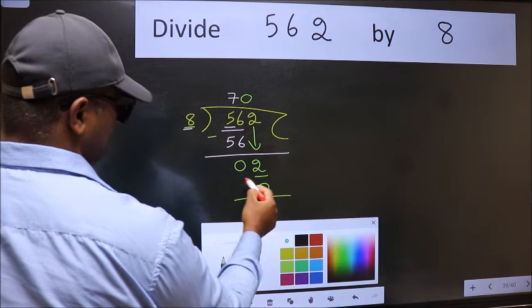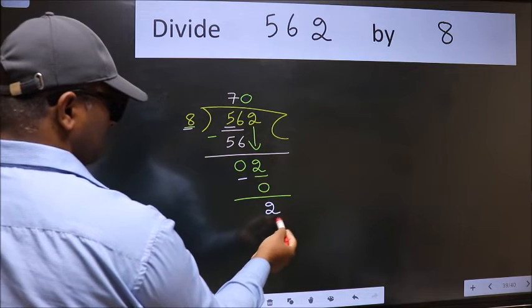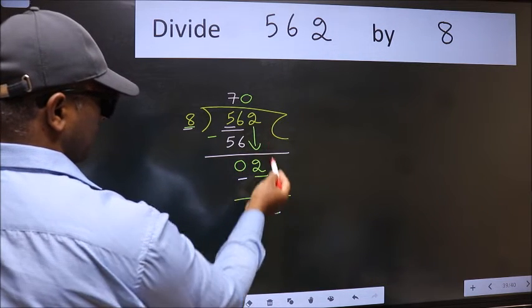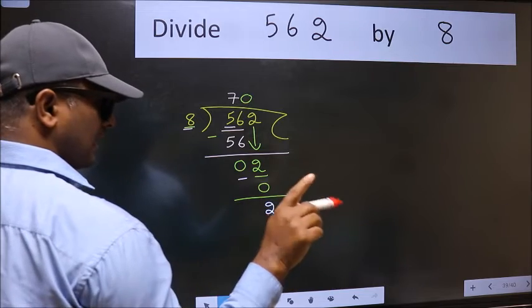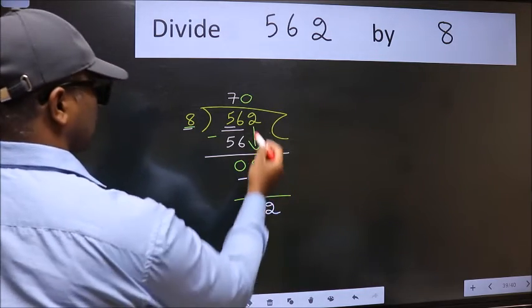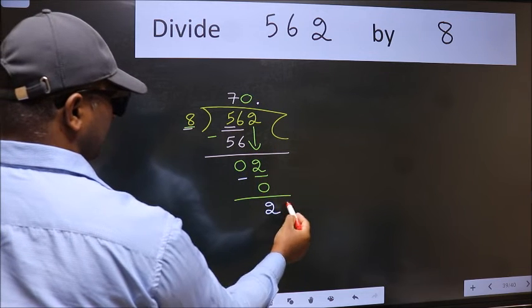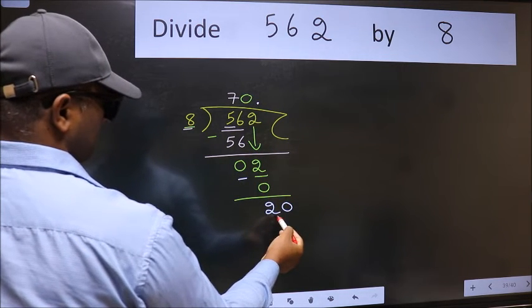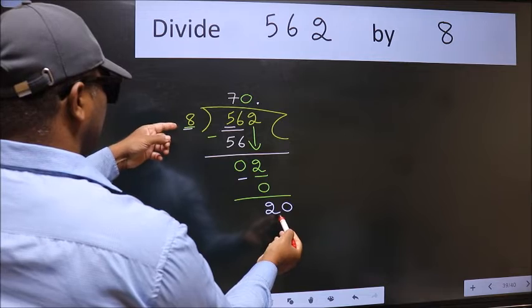Now we subtract, we get 2. Over here we did not bring any number down, and 2 is smaller than 8. So now we can put dot and take 0. So 20. A number close to 20 in 8 table is 8 twos 16.